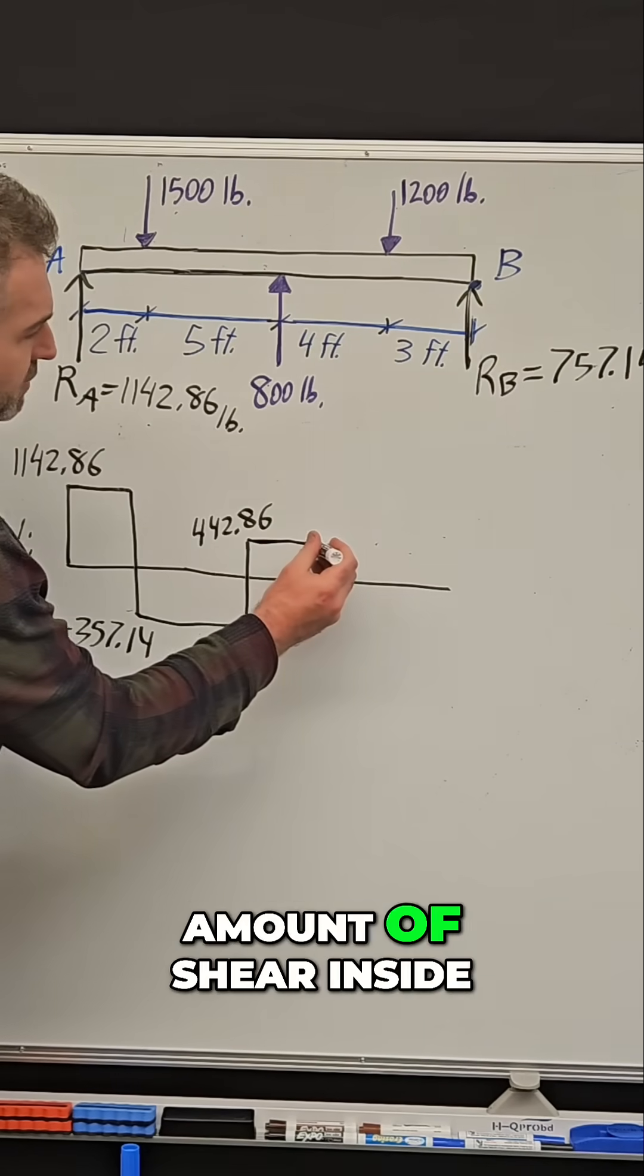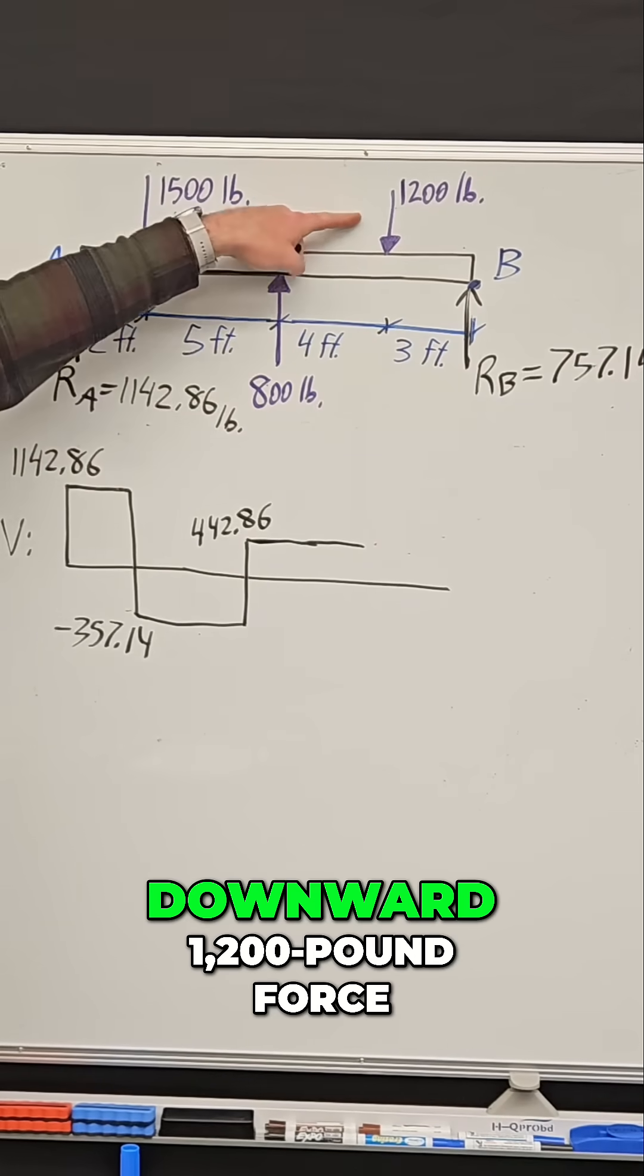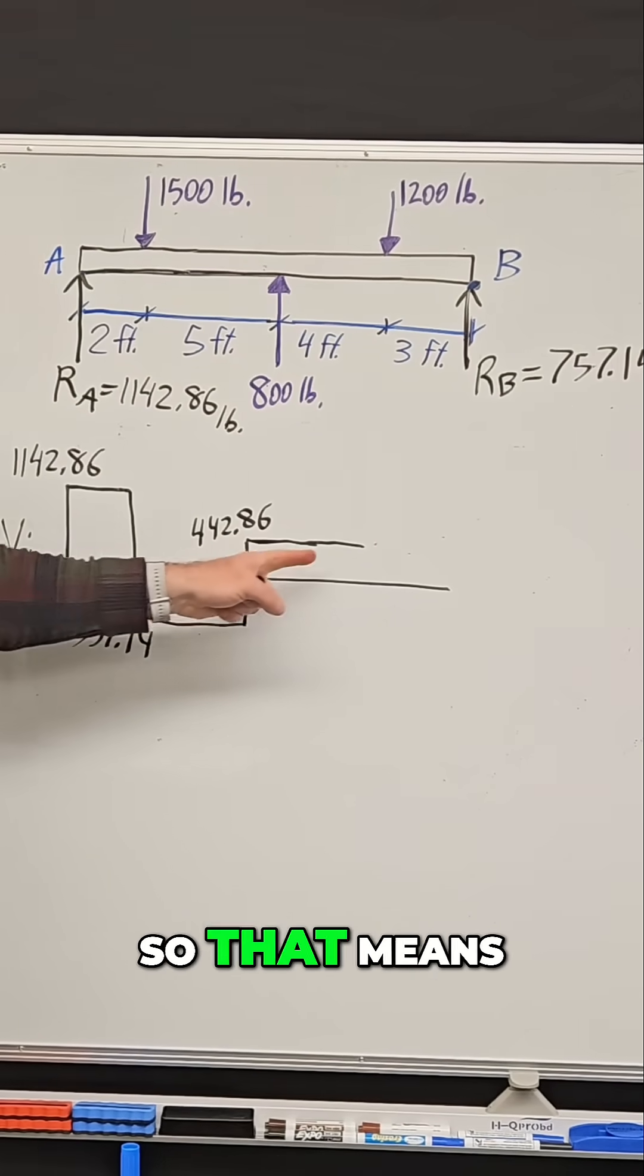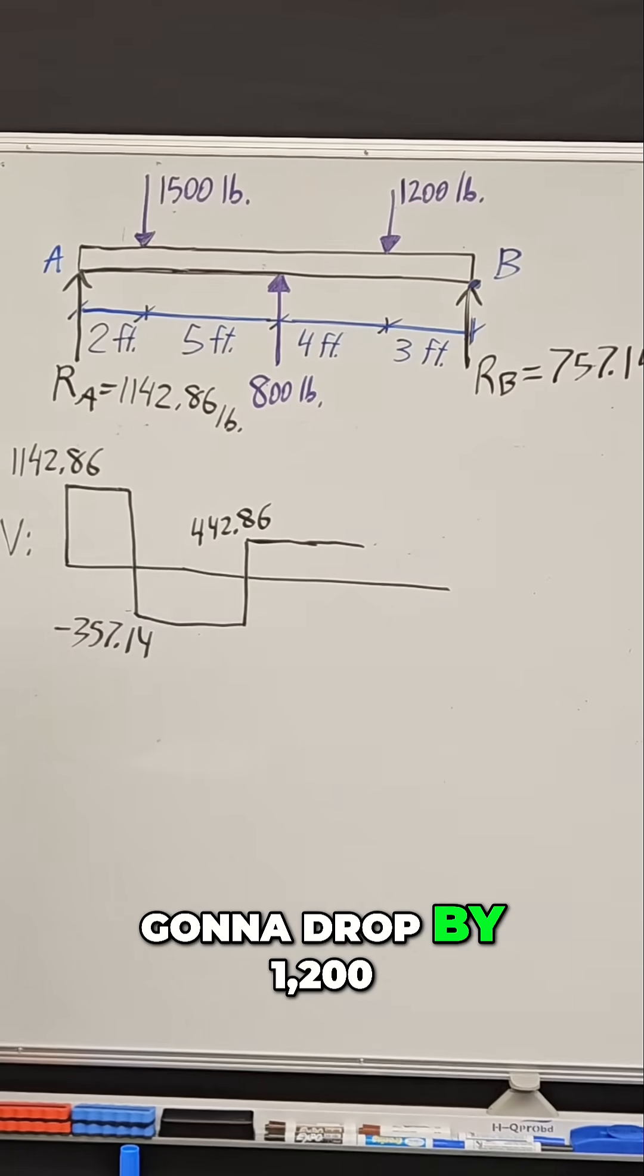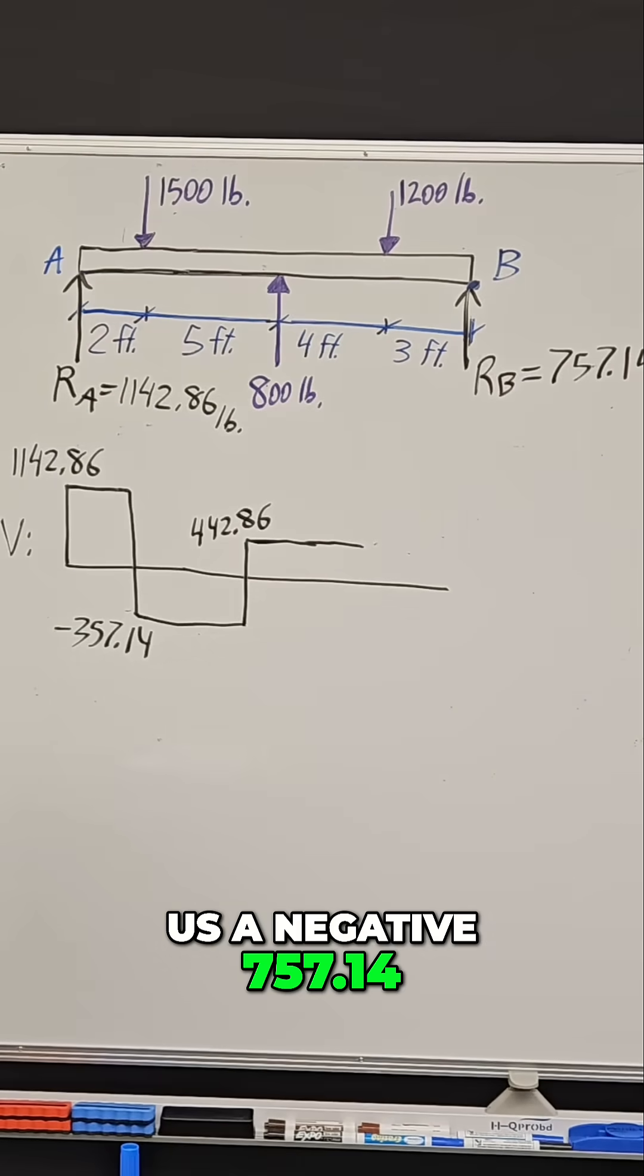We've gone back to positive shear and it's going to stay at this amount inside the beam until another force is encountered, which is the downward 1200 pound force. This shear is going to drop by 1200, giving us negative 757.14.